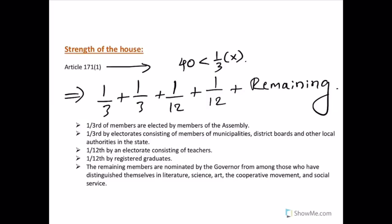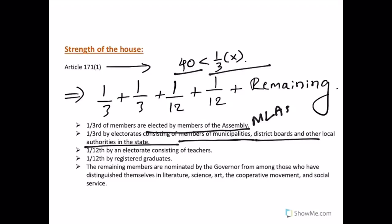At the same time, the strength cannot be less than 40. Out of the total members, one-third are elected by MLAs; another one-third by electorates from municipalities, district boards, and local authorities; one-twelfth by an electorate of teachers; one-twelfth by registered graduates; and the remaining members are nominated by the governor from backgrounds including literature, science, art, cooperative movement, and social service.